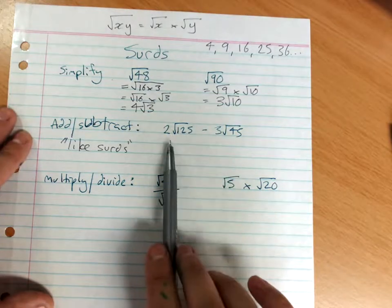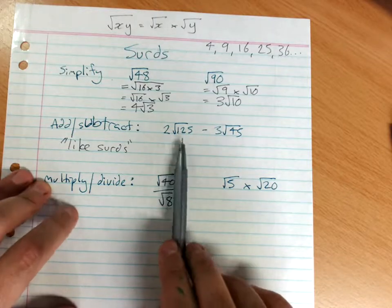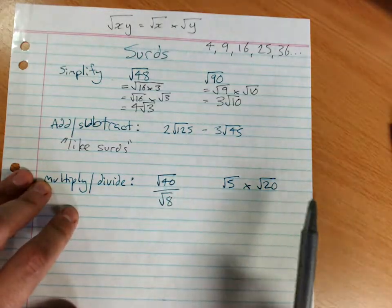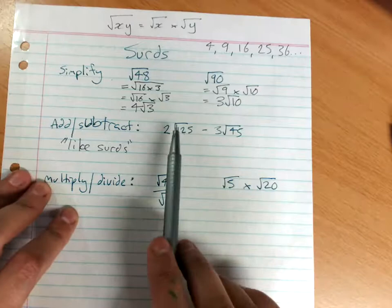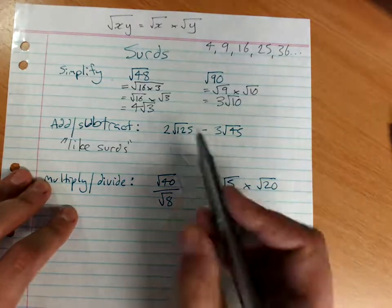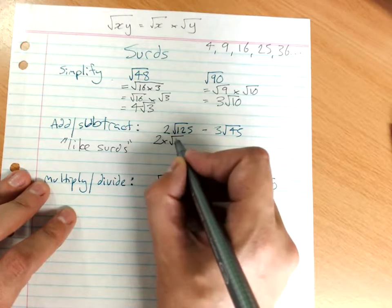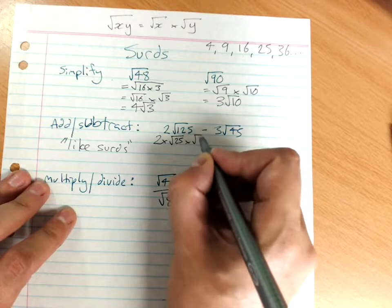So these don't look like they're like surds, but you can see that we would be able to simplify both of them. So you're looking for a square factor of 125, that's 25. So this is 2 times root 25 times root 3.